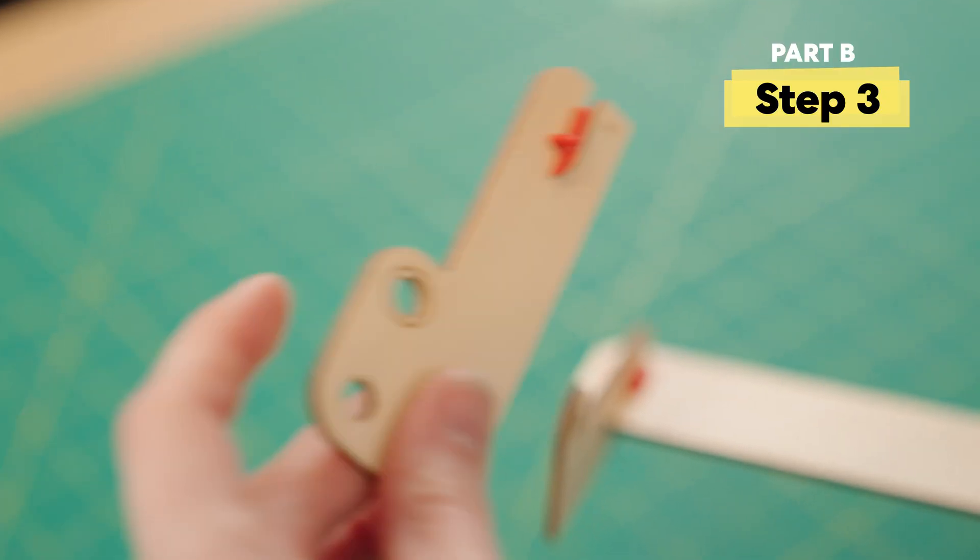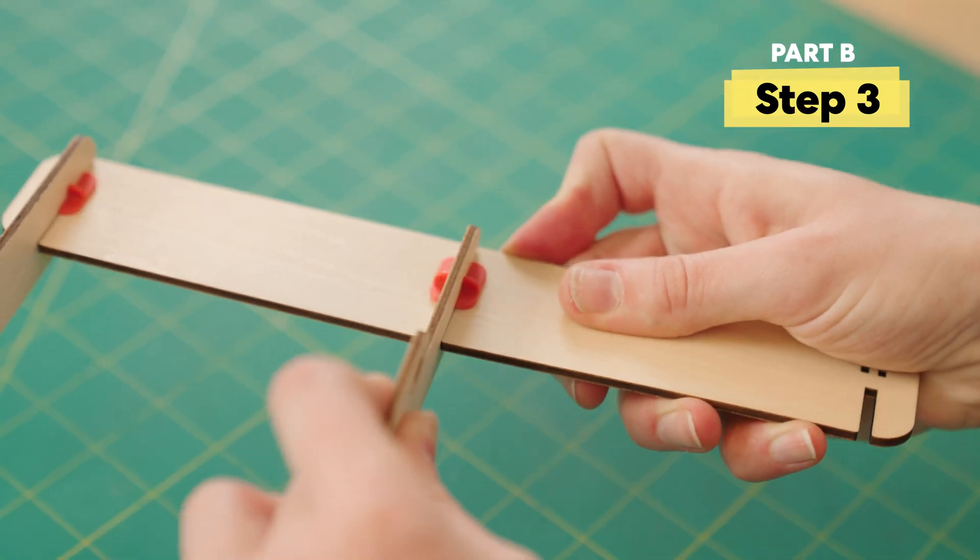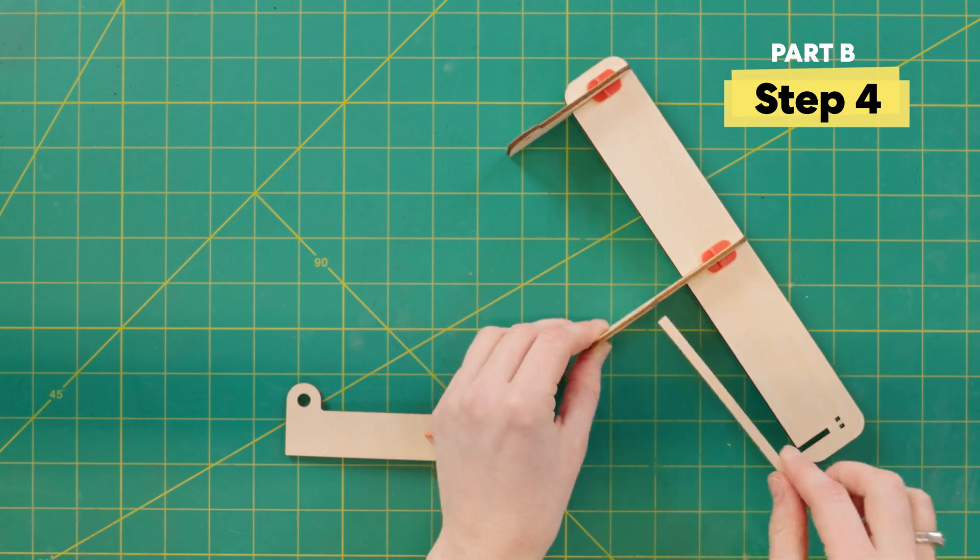Then slide the wood with the letter B on it into the middle. Next, slide on dowels into the correct hole.